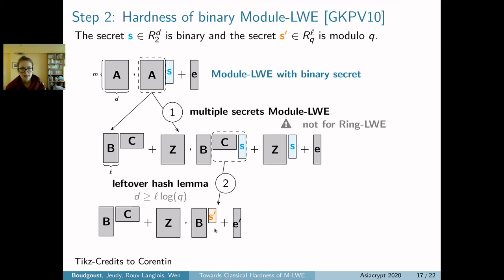The second step is that we argue, due to the leftover hash lemma, C·S can be replaced by S' where S' is uniformly an element in R_q. In order to apply the leftover hash lemma, the rank D has to be larger than L·log(q). You can see, even if I take L=1, the rank has to be at least logarithmic in q. As you remember, in this picture q was exponentially large, so you can see the rank has to be linear in fact.